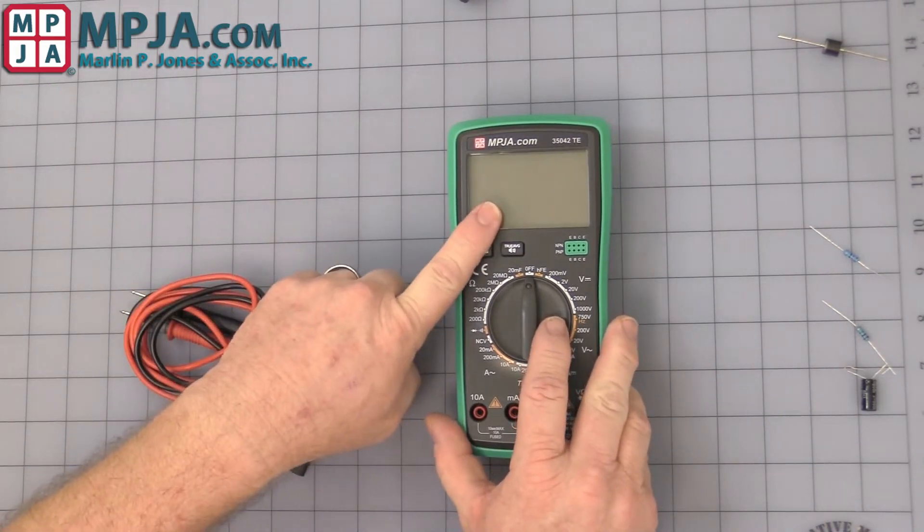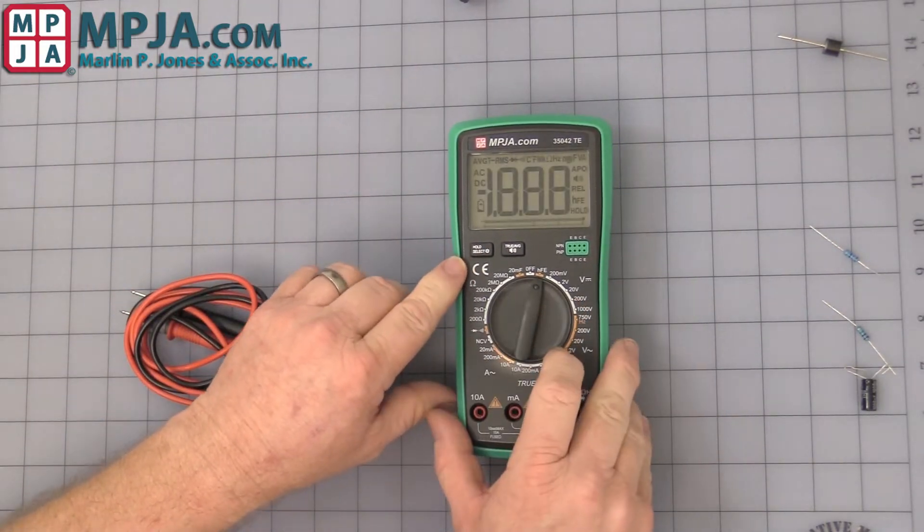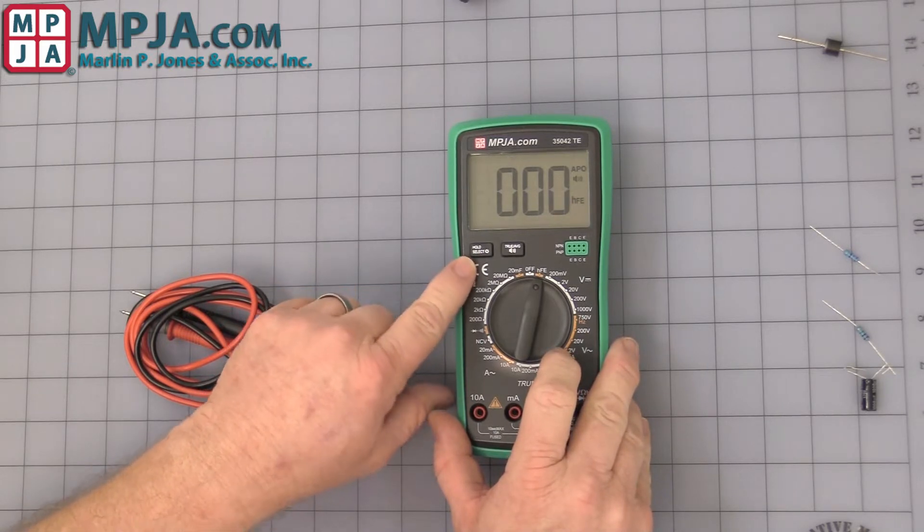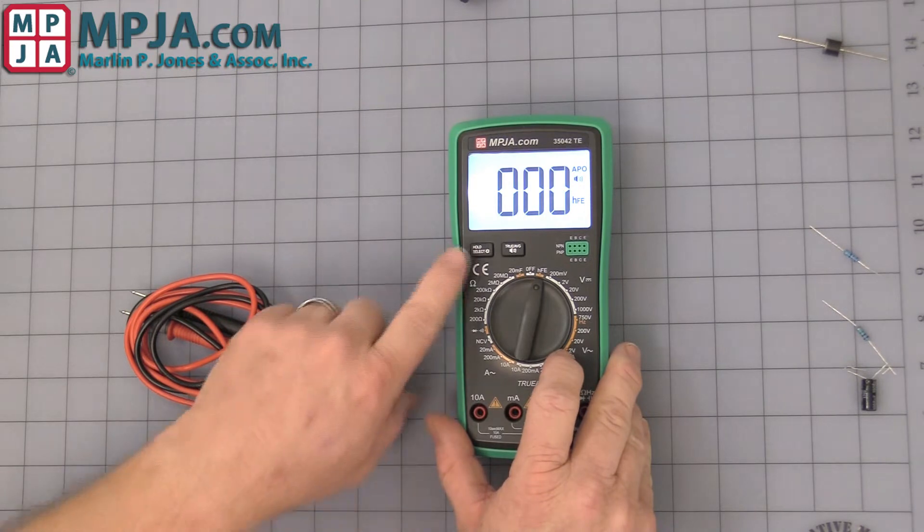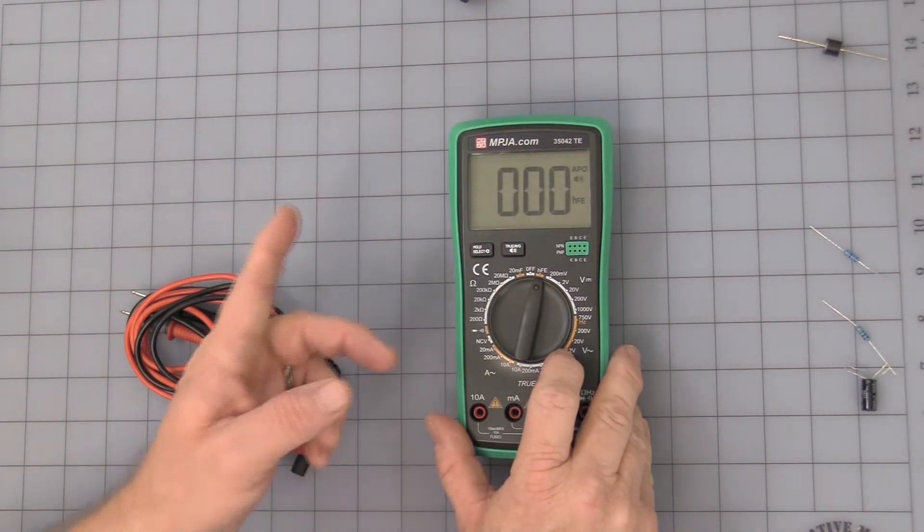First off you have the display, you have a button here called hold select. If you hold down that button you can turn on the backlighting, hold down that button again, and it turns off the backlighting.